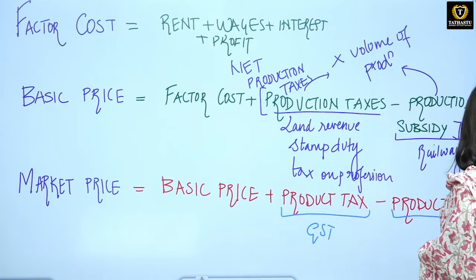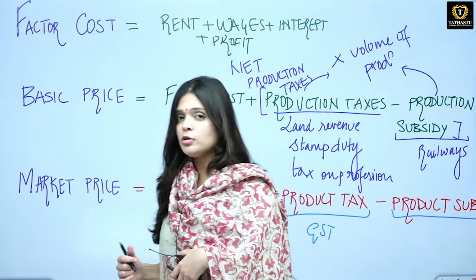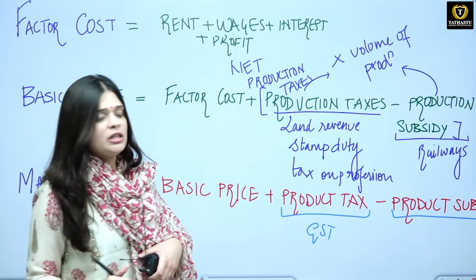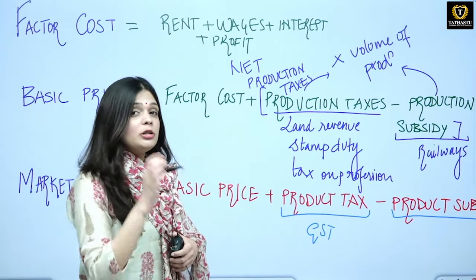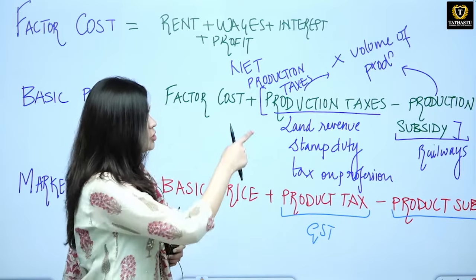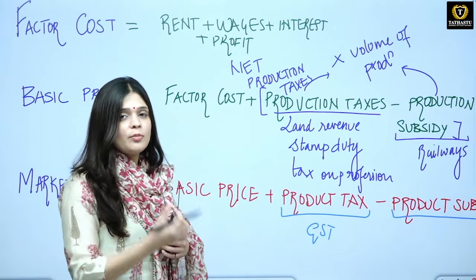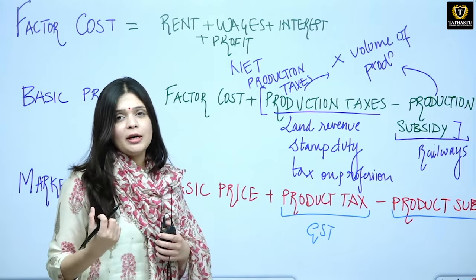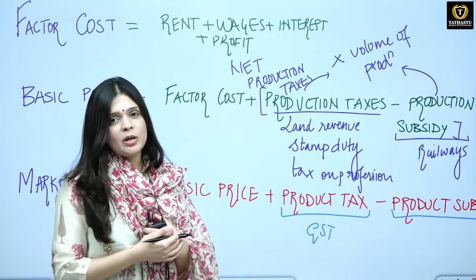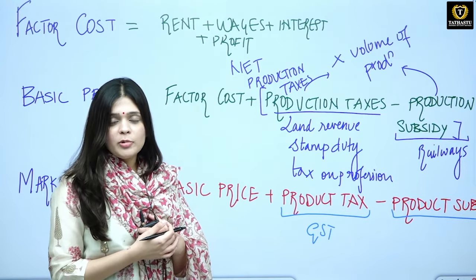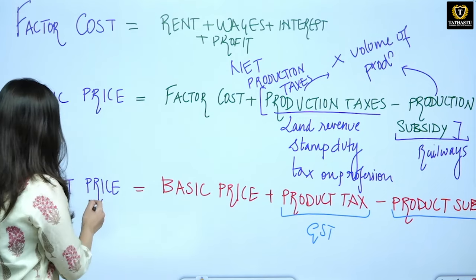Product subsidy also depends upon the volume of production. Farmers receive certain subsidies — seeds and fertilizers fall under production subsidy, but certain other subsidies they receive are product subsidies. Even consumers get some subsidy depending upon the volume they are consuming. This is the market price.